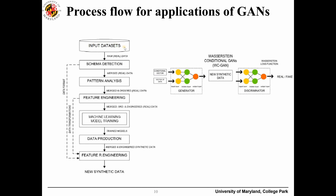Generally, the process flow of data generation is: we get input data, analyze it, do feature engineering — extracting statistical distributions, relationships between variables, and trends and patterns. Based on that, we use GANs to generate synthetic data. Historically, before GANs, people tried artificial neural networks or other algorithms, but with GANs we more effectively generate synthetic data and pass it forward for use.